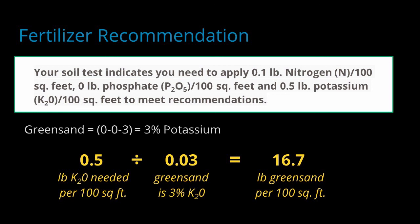We can do similar calculations for the potassium. The fertilizer instructions say to add a half pound of potassium for every 100 square feet. Since the green sand contains 3% potassium, we'll need to apply 16.7 pounds of green sand to every 100 square feet of the garden. That's a lot of green sand.